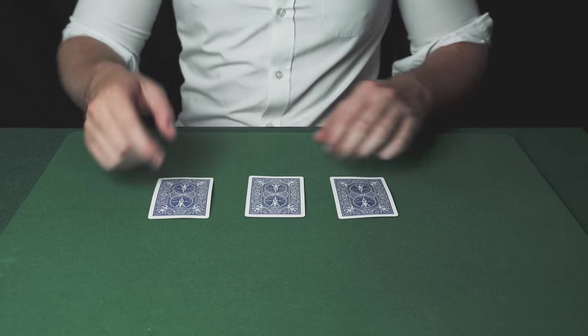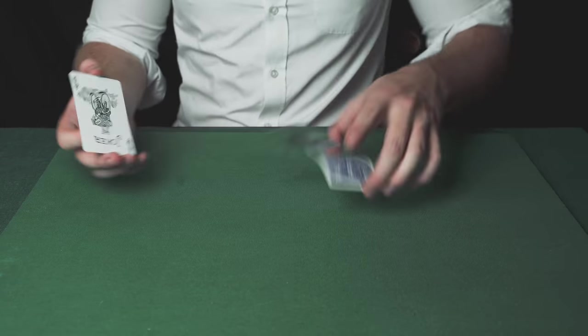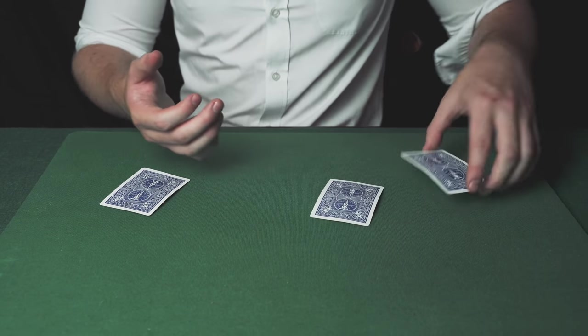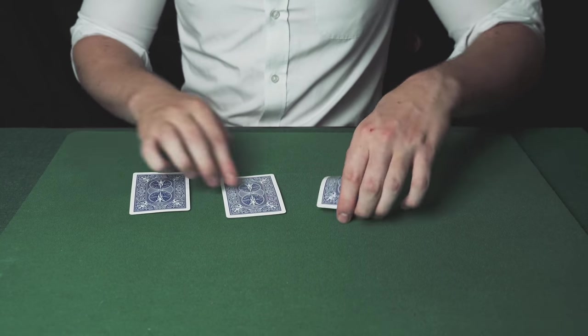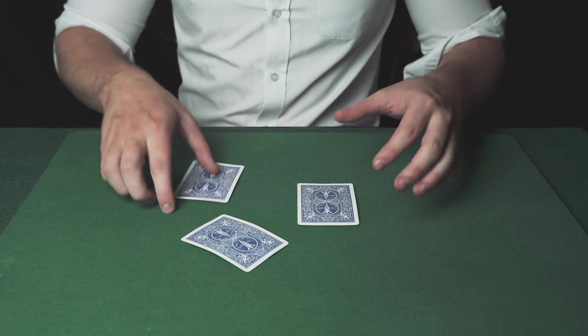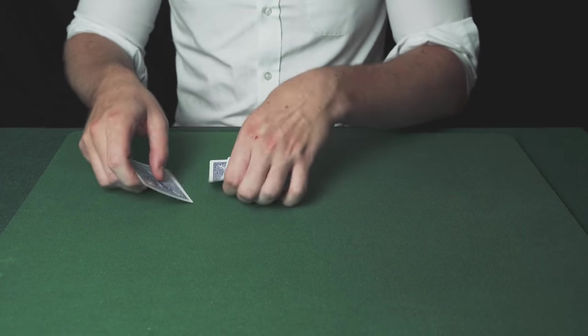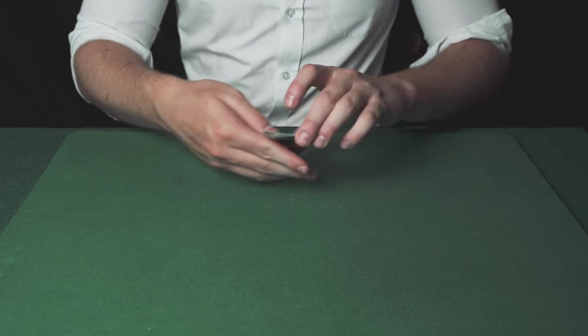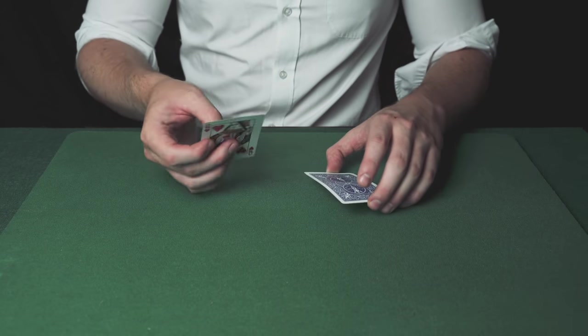The magician shows the spectator again. He throws the queen onto the table, leaving one joker, two jokers, and three jokers. The magician checks again: one joker, two jokers, and three jokers. The spectator is confused and asks where the queen is. The magician snaps his fingers and shows that all three cards are now queens. That is the Three Card Monte.